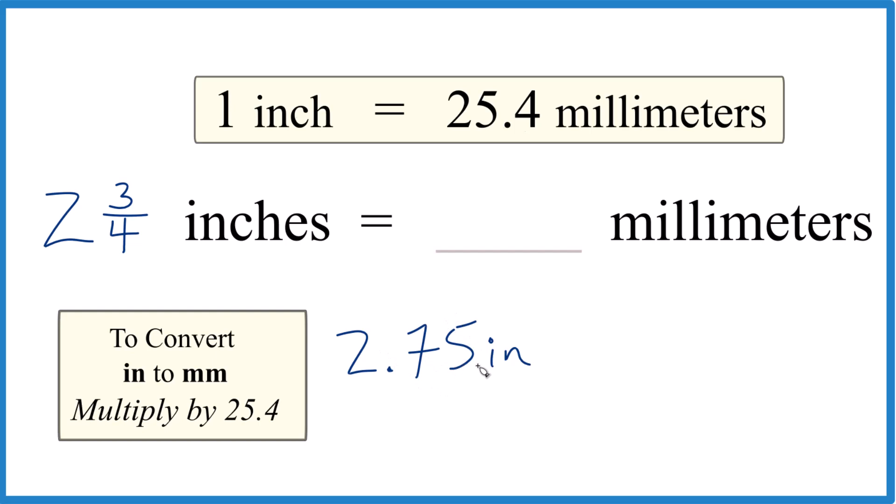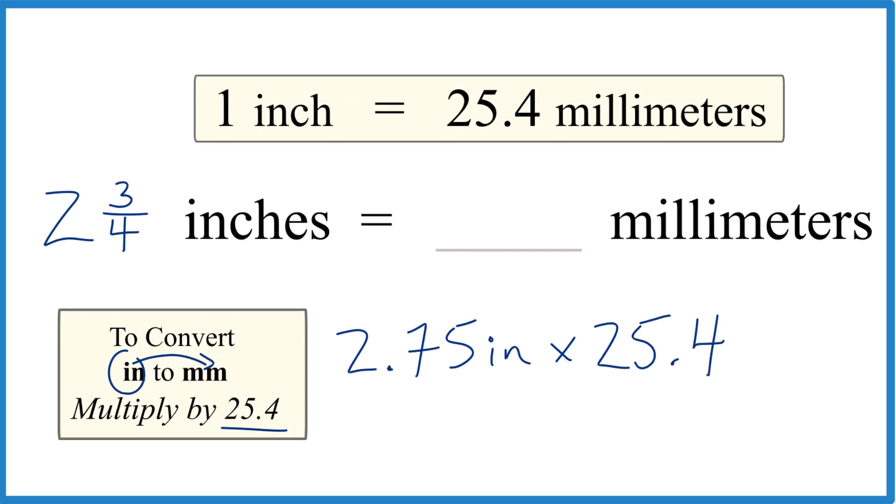So 2.75 inches. When we go from inches to millimeters here, we're going to multiply by 25.4 millimeters. That's because one inch is 25.4 millimeters. So we multiply by 25.4, and that's 25.4 millimeters in one inch. So you could just call it 25.4 millimeters per inch. Those would be the units.